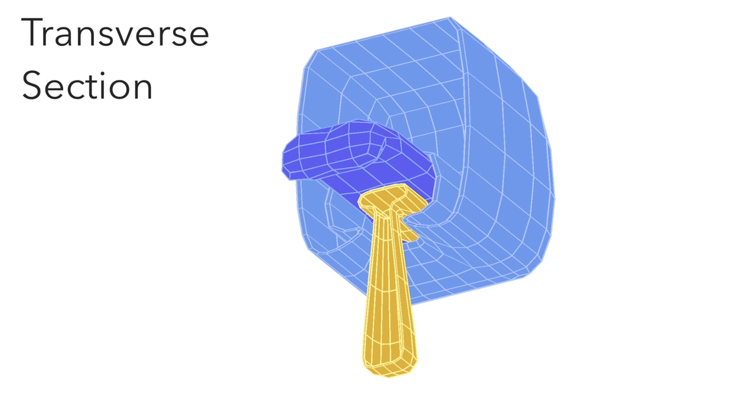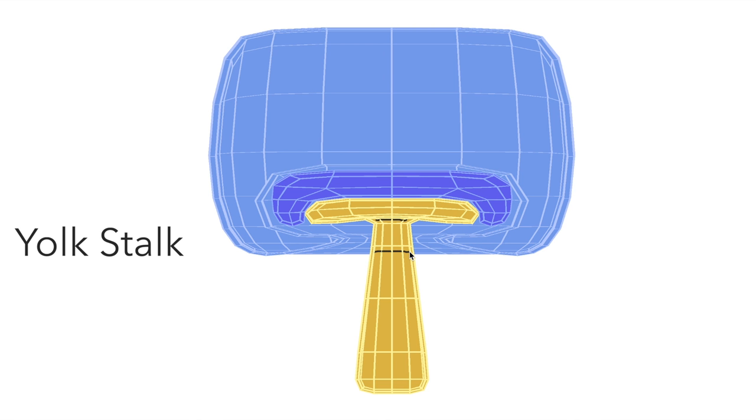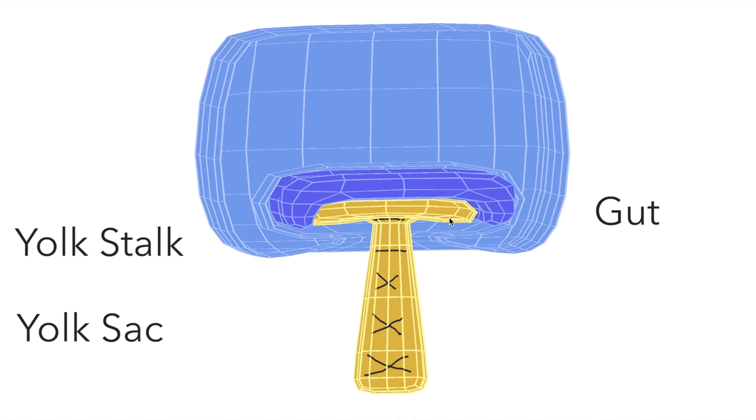This part is now known as the yolk stalk. This part below is now the yolk sac. And this, this is now the gut, what will become the gastrointestinal tract.